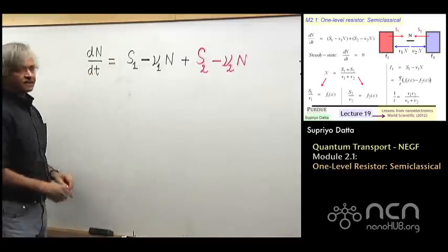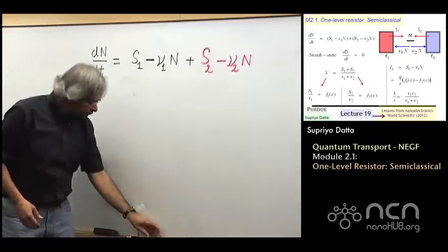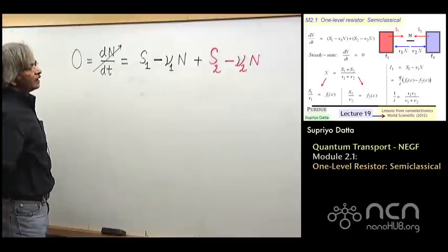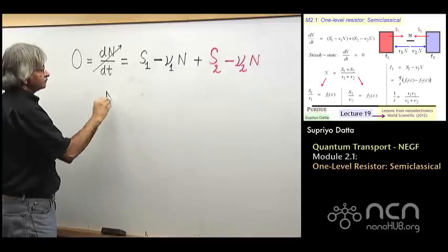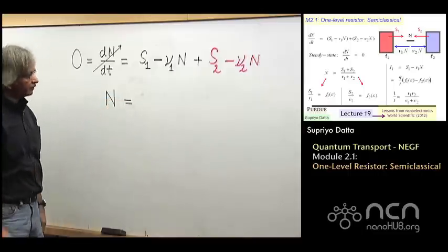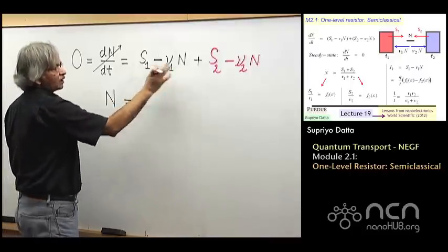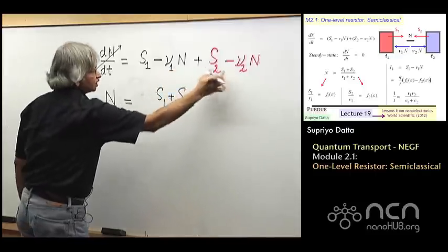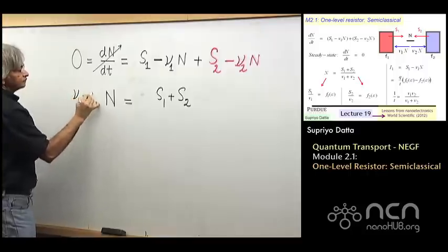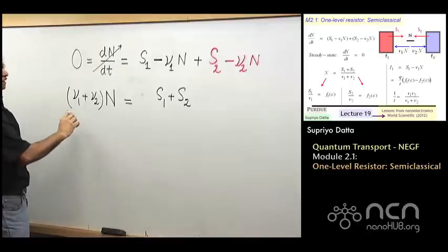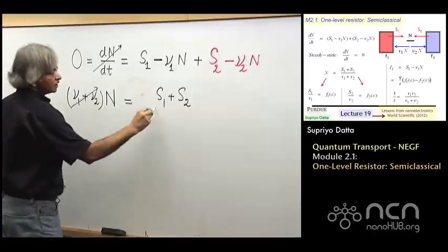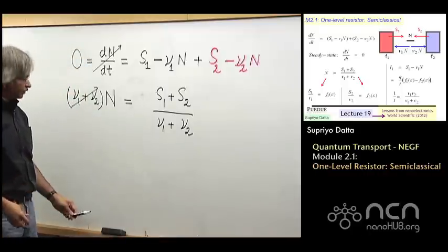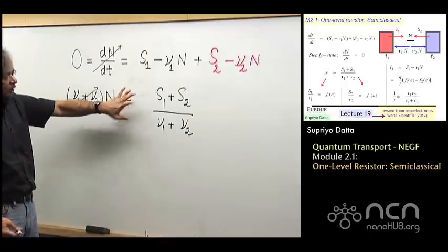Now at steady state, steady state means when nothing changes with time anymore, then you see I can put this equal to 0. I can drop this. It's equal to 0. And so at steady state, the number of electrons inside can be written as, see if you solve this, you see there's s1 plus s2, and then there's two terms that involve n, I could put on this side. And what that means is I can divide through by this term and get the steady state number. So this is the steady state number of electrons inside the, that one level, occupying that one level.